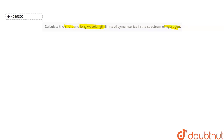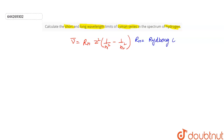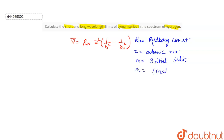We are given Lyman series. Lyman series means the initial orbit n1 is equal to 1. We have to find the shortest and longest wavelength. For this calculation, we need the formula: wavenumber nu-bar equals Rh times Z squared times (1/n1² − 1/n2²), where Rh is the Rydberg constant, Z is the atomic number, n1 is the initial orbit, and n2 is the final orbit.